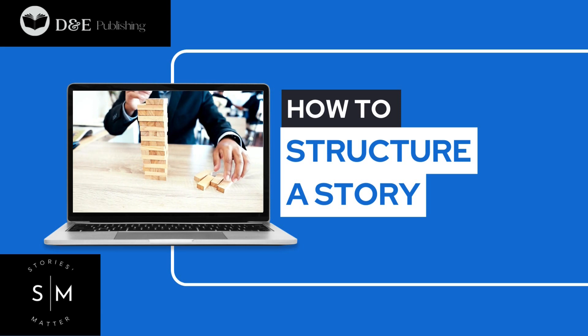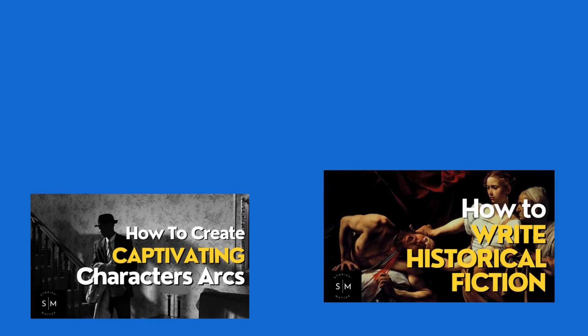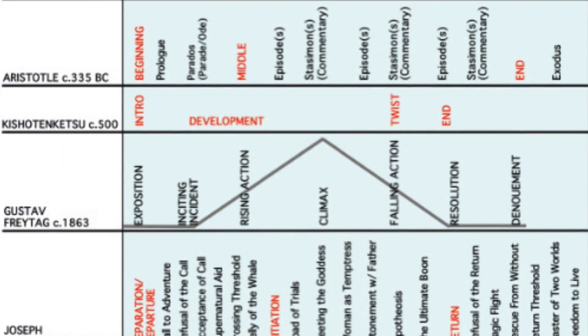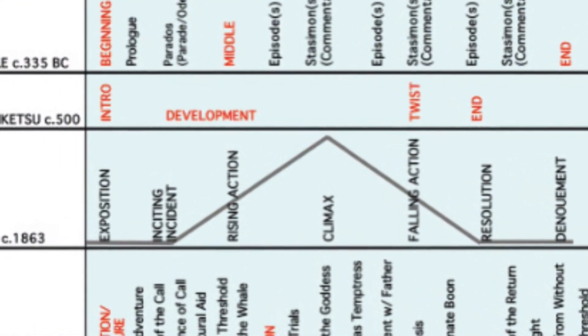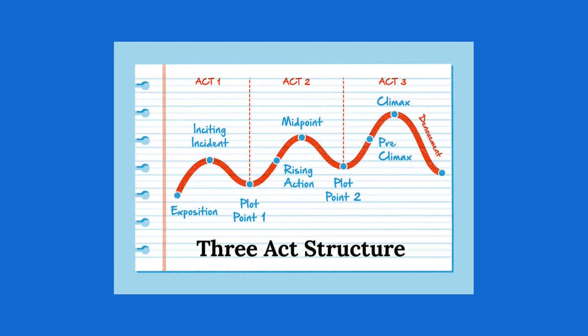So far in this 87-part series, we've discussed character, genre, dialogue, how to handle horny fives at a book signing, but there's one topic we haven't talked about much. And it's one I haven't covered for a reason. Story structure can be one of the most stressful and maddening things for a new writer to tackle. There are so many to choose from, even though they don't seem all that different.